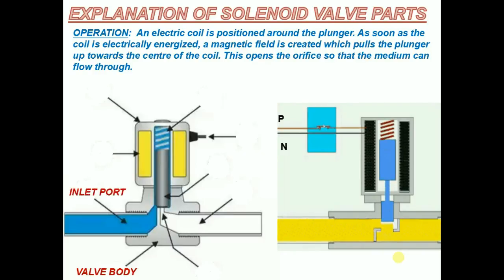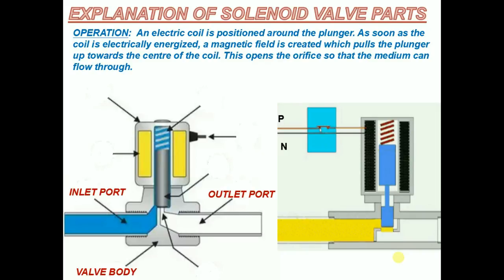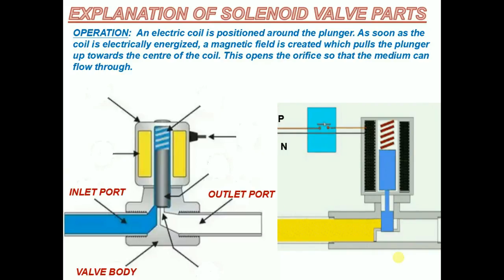Inlet port of the valve — this is the port through which the fluid enters inside the valve and from here it can enter into the final process. Outlet port — the fluid that is allowed to pass through the valve leaves the valve through the outlet port. The solenoid valve controls the flow of the fluid from inlet port to the outlet port.